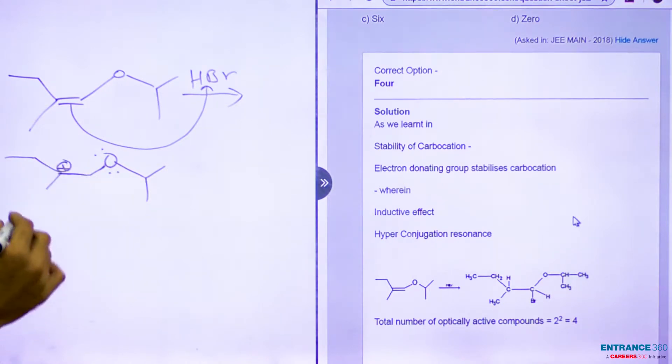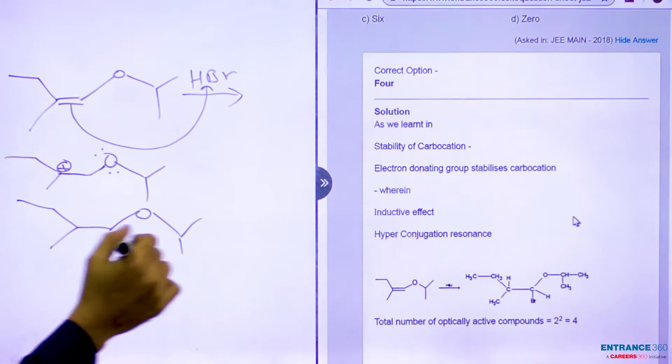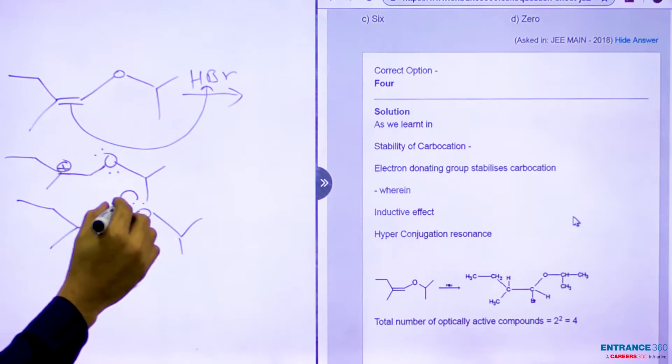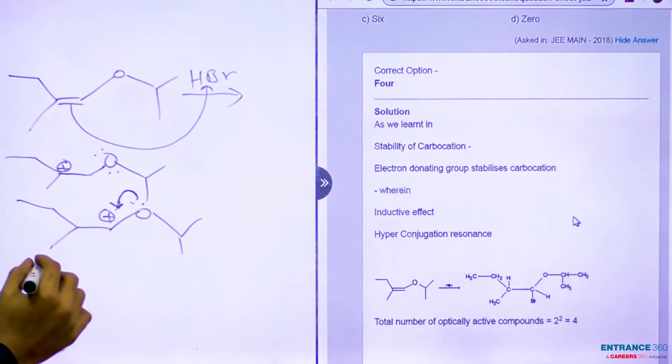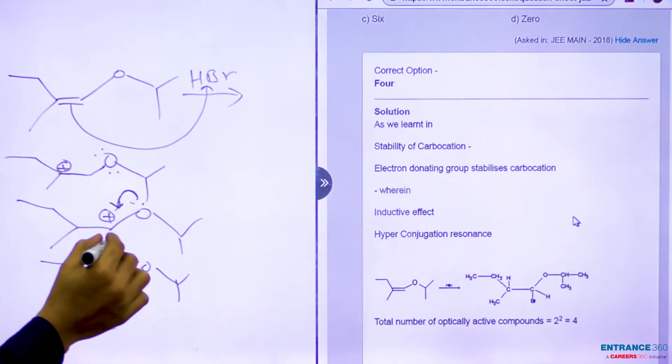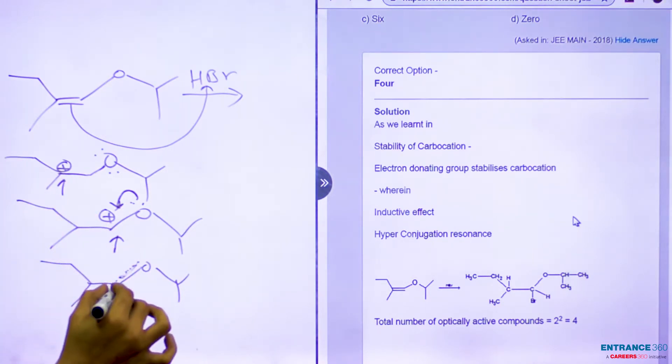Oxygen has two lone pairs. If the carbocation is here, then the lone pair will stabilize the carbocation. The stability of the carbocation will increase because of the lone pair of oxygen. It will form a partial bond with oxygen, so the stability of this carbocation is much stronger than the other carbocation.